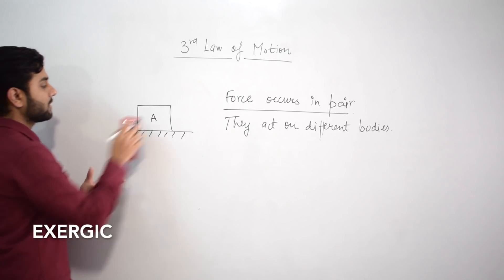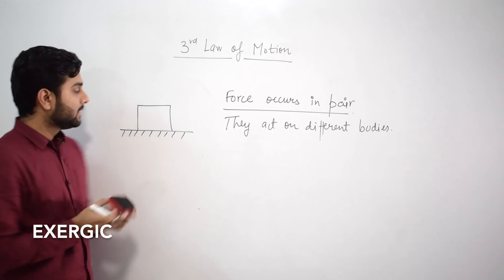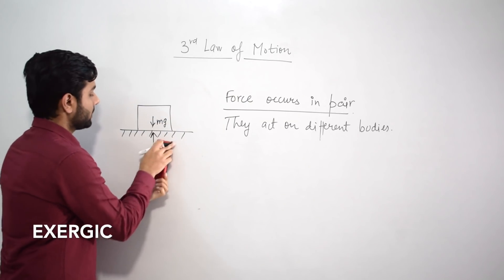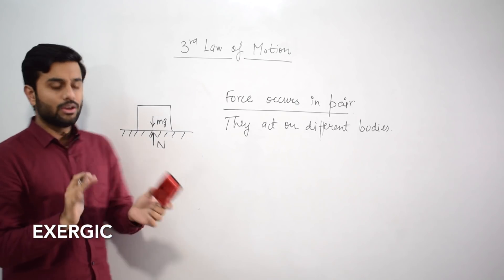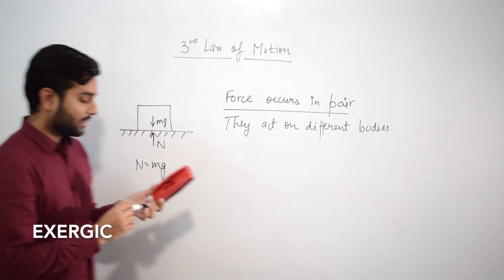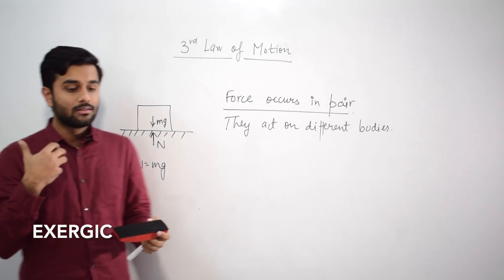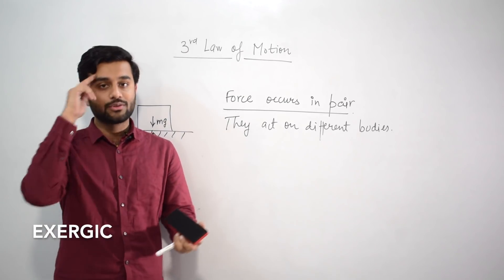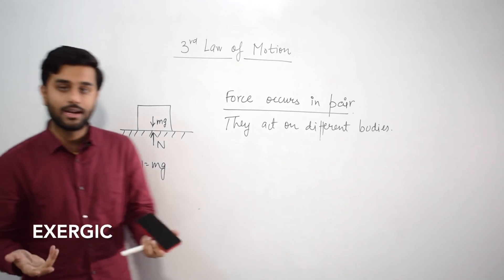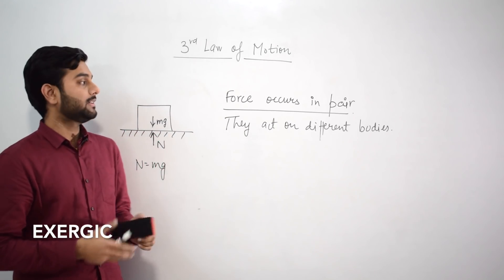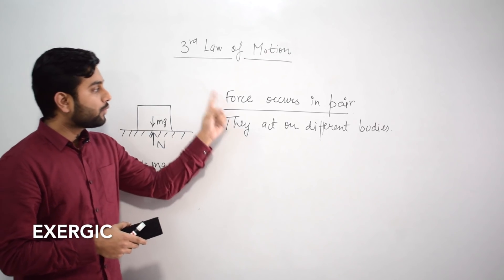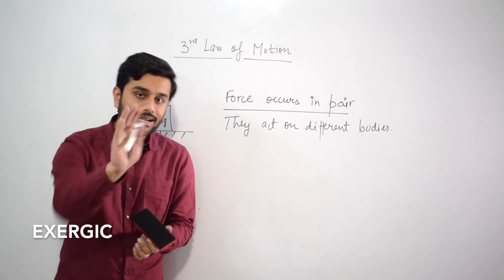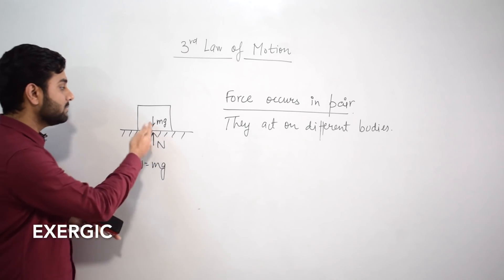And they act on different bodies. Now you may be thinking, okay simple enough, force occurs in pair, A applied force on B, B applied force on A, that's it. That's where the law ends, but it's not like that. Let me show you a very interesting case. There is a block sitting on a surface. This is having a weight mg in the downward direction and a normal reaction N will be given by this surface on the block. And we know that N in such a case is equal to mg. Now, what many of you will think is that this block applied a force mg on the surface and the surface gave a normal reaction. It gives you a feel that mg is an action and this is a reaction.